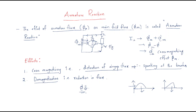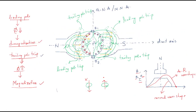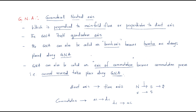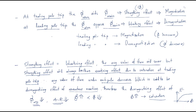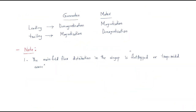Hello everyone. In the last session we discussed about armature reaction, where we covered main field flux, cross magnetizing, demagnetizing effects, GNA, MNA, and their effects. Today we have to discuss some more continuation points on armature reaction.